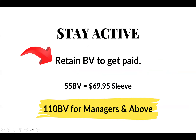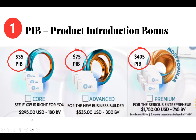You want to stay active. If you're doing the business, you want to stay active with a qualifying order every 31 days in order to retain the BV — the business volume — from your team, because that's how you get paid. If you're not active, that BV will flush out and you can't get it back — you'll have to start over. Before you get to manager, it's just 55 BV a month, or any one of our $69.95 sleeves. If you're on the X39 at $99.95, that gives you 77 BV. If you are a manager and above, you have to have 110 BV — an X39 plus one $69.95 sleeve will give you more than enough.